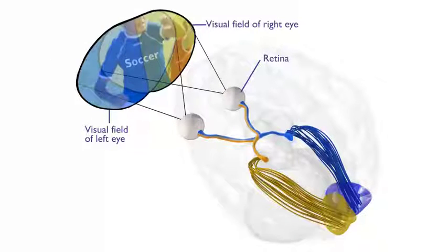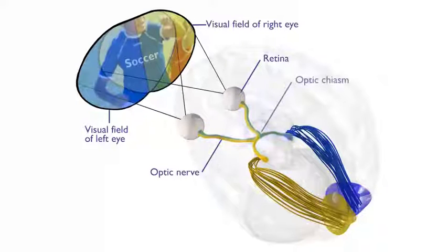On its way to the thalamus, the optic nerve crisscrosses to form a large white X, known as the optic chiasm.